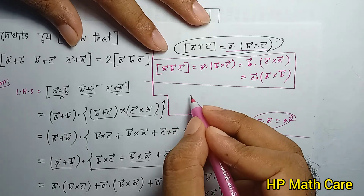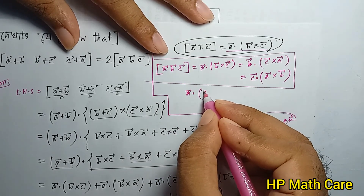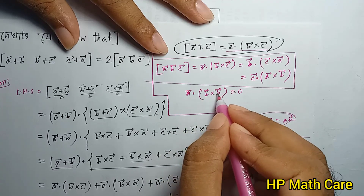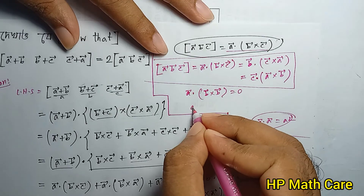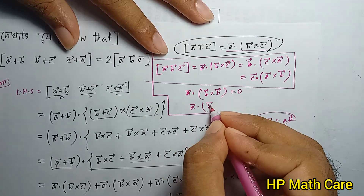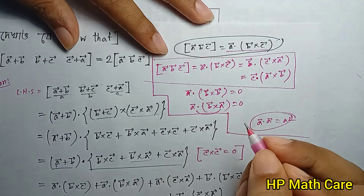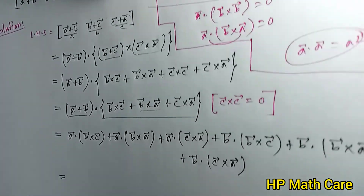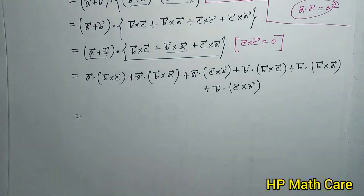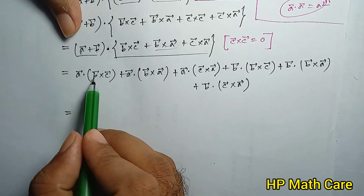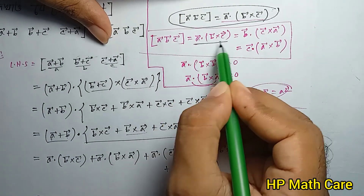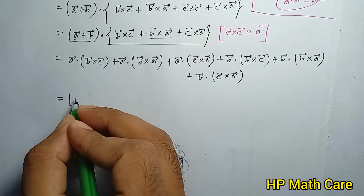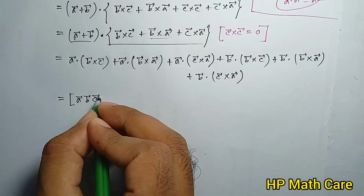The surviving terms are: a dot (b cross c), which is box [a, b, c]; b dot (c cross a), which is also box [a, b, c]; and c dot (a cross b), which is again box [a, b, c]. Each equals the same box product value.